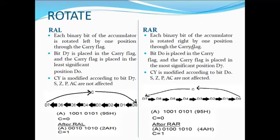In RAR, each binary bit of the accumulator is rotated right by one position through the carry flag. Bit D0 is placed in the carry flag, and the carry flag is placed in the most significant position D7. The carry flag is modified accordingly, and the other flags are not affected. That's all about logical instructions. Thank you.